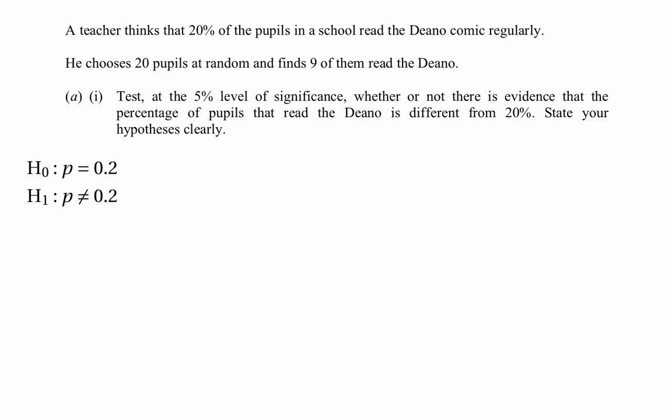The teacher wants to know whether the proportion is different from 20%, not just less or greater, so it's a two-tailed test. Our test statistic has the binomial distribution with parameters 20 and 0.2, because if the null hypothesis is true we have 20 pupils and the probability of success — reading the Dino regularly — is 0.2. It's clearly binomial because we're counting the number of successes in a sequence of trials, each trial being an individual pupil.